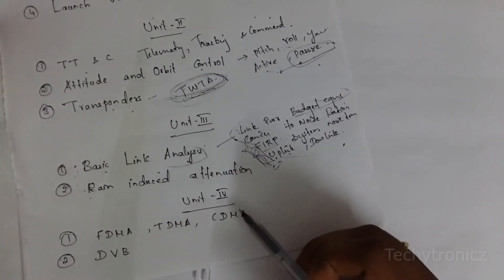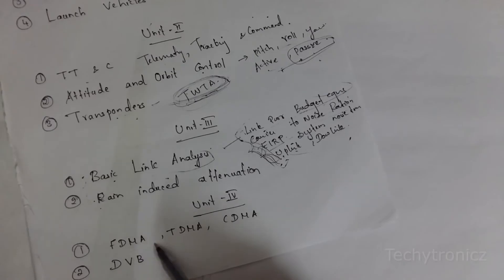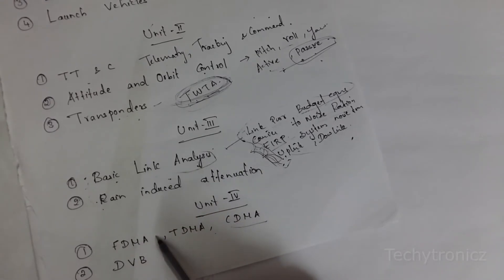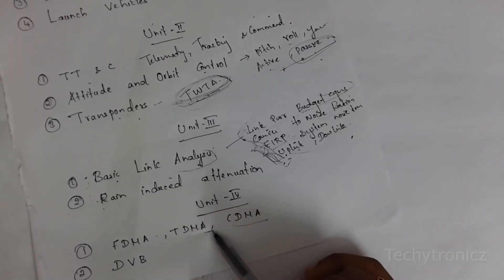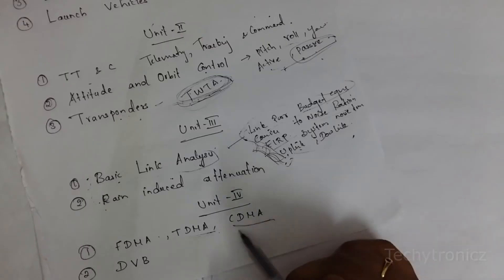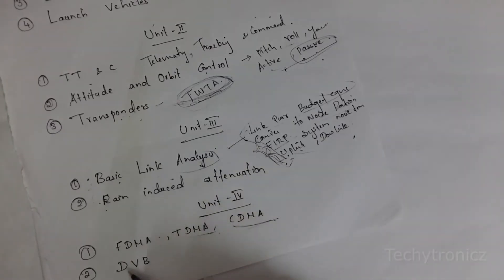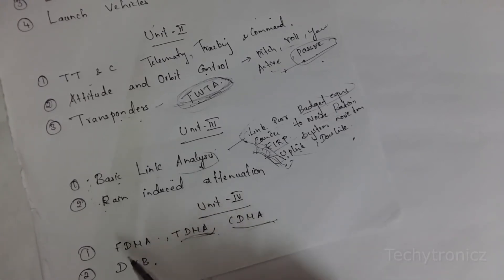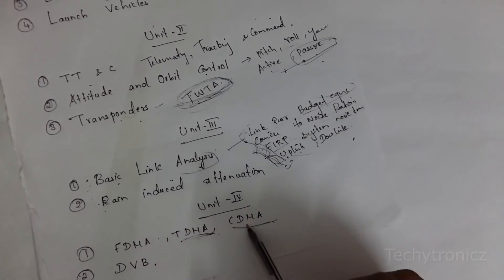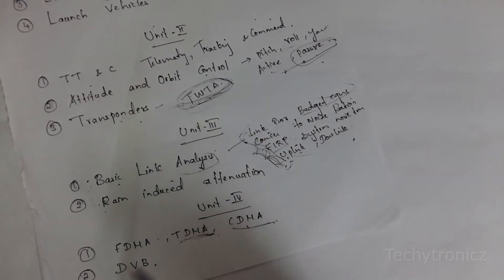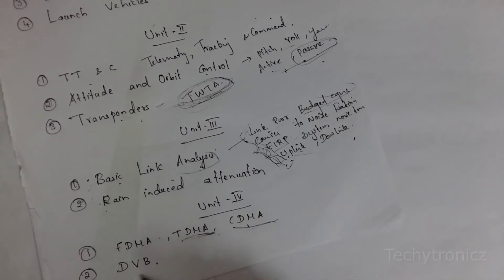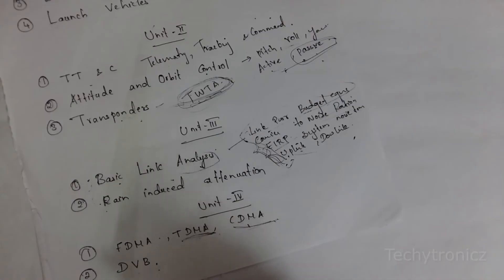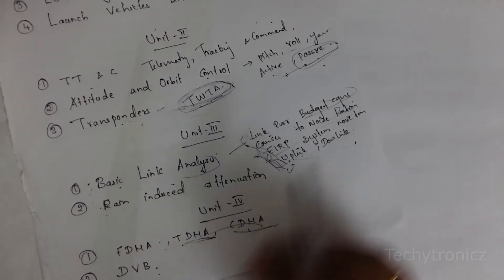In unit 4, FDMA, TDMA, and CDMA are important. FDMA is frequency division multiplex, TDMA is time division multiplex, and CDMA is code division multiplex — you have already learned these in different subjects. Any one question from these three will be in your question paper. Another important question is DVB — digital video broadcast. If you learn these questions you can attend any one of them.